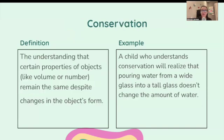Conservation: the understanding that certain properties of objects — like volume or number — remain the same despite changes in the object's form. For example, a child who understands conservation will realize that pouring water from a wide glass into a tall glass doesn't change the amount of water.